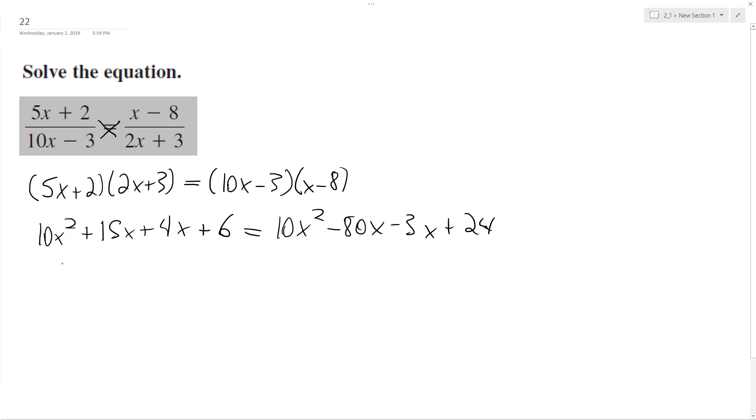Alright, so next what we're going to do is just combine 10x plus 19x plus 6 equals 10x squared minus 83x plus 24. So x squares cancel out.